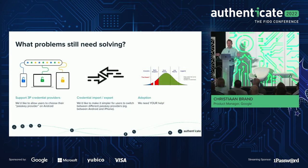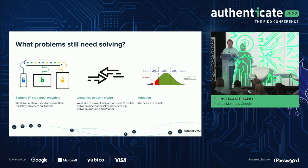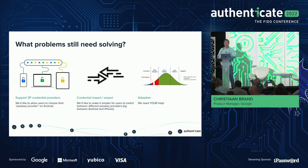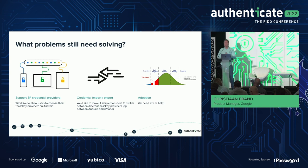We still need to solve some problems — we're not pretending everything is completely done. First, we need to support third-party credential providers. We also need some way of moving users from one ecosystem to another — if someone wants to change from Apple to Android or from a third-party credential provider to something else, there needs to be a solution. We don't think that's just putting passkeys in a file on disk, but we need to figure that out. And lastly, we need adoption — that's where we need everyone's help. We've built this, now we need everyone to come. If you're interested in learning more or need help, we'll be here this week and we're happy to talk to folks about adoption.